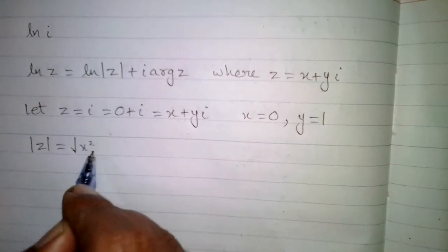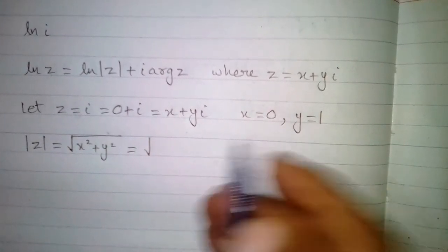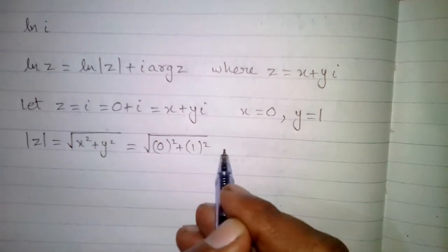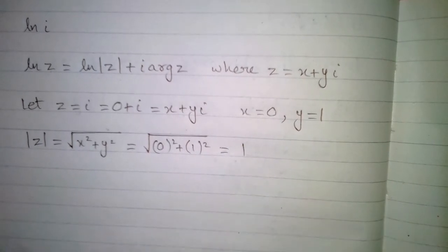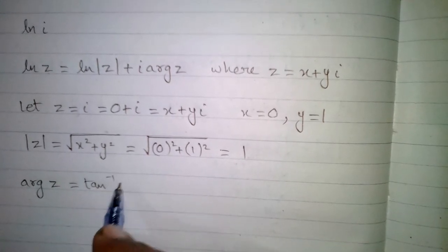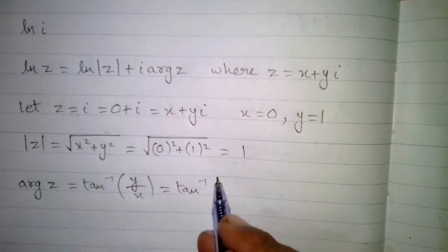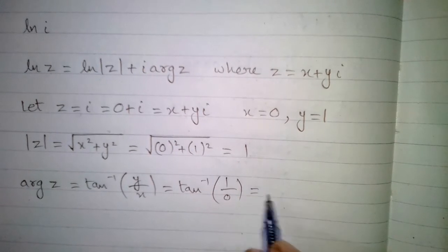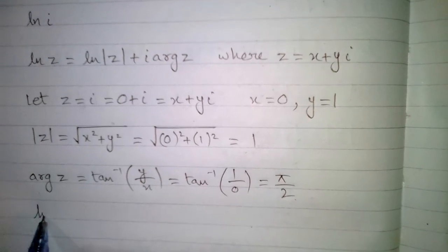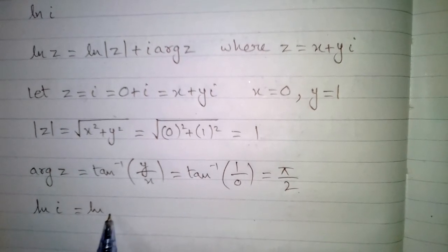We have y equal to 1. Now we find the modulus of z, which is the square root of x squared plus y squared. Putting in the values, we get the square root of 0 squared plus 1 squared, which equals 1. Now we find the argument of z, which is tan inverse of y upon x — that is tan inverse of 1 upon 0 — which is equal to π/2.